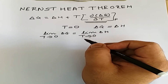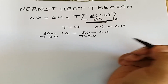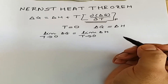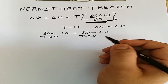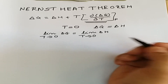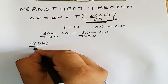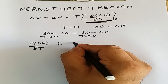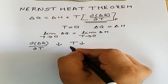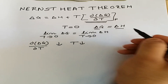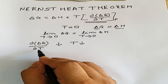This relation was experimentally proved by Nernst by carrying out several measurements of the EMF of different cells at various temperatures. He observed that the value of dΔG/dT decreases as the temperature of the system decreases, and hence he concluded that ΔG and ΔH approach each other as the temperature of the system is lowered.